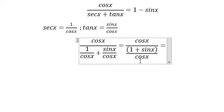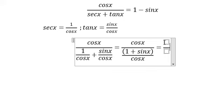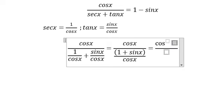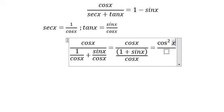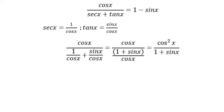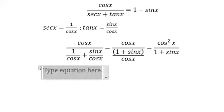Because we have this in the fraction, this cosine x will go to the numerator and we get cosine x squared, and we have 1 plus sine x. This is where we have the formula sine x squared plus cosine x squared equals 1.